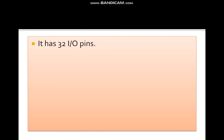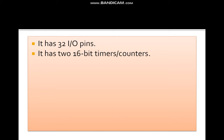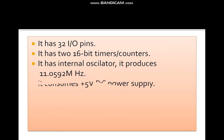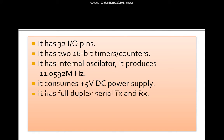It has 32 IO pins across 4 ports: P0, P1, P2, and P3. Each port contains 8 pins, giving 32 IO pins total. It has two 16-bit timers and counters. It has an internal oscillator that produces 11.0592 MHz. It consumes plus 5V DC power supply and has a full duplex serial transmitter and receiver.